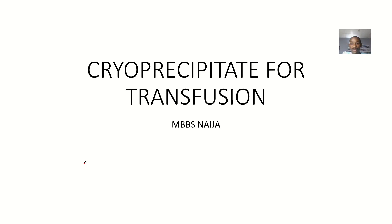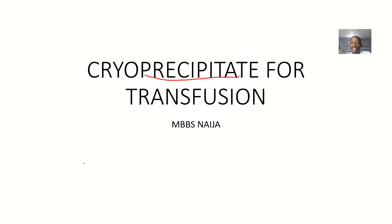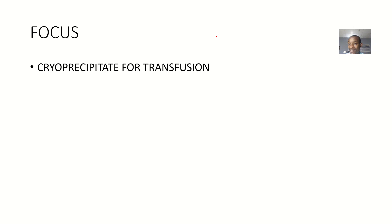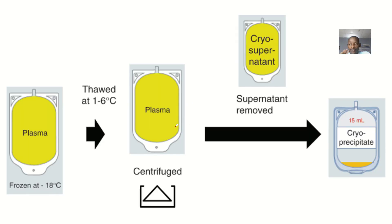There's another available blood product that could be used for transfusion, and that's the cryoprecipitate. Sometimes a patient might come to the hospital needing just one component of blood. In previous times, anytime you needed any component, they would give you whole blood. But now medicine is advancing to where they concentrate that specific component and give it to you. One of these methods is known as cryoprecipitate.